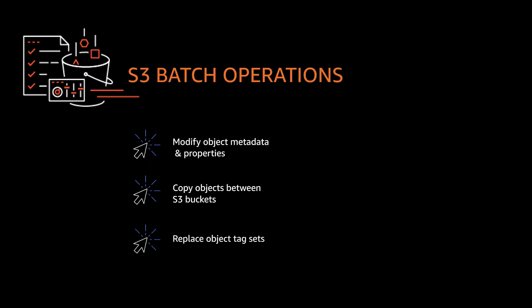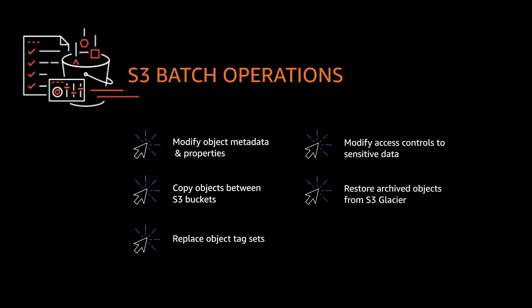You can also replace object tag sets, modify access controls to sensitive data, restore archived objects from Amazon S3 Glacier, and invoke AWS Lambda functions across all of your S3 objects.